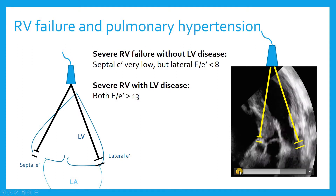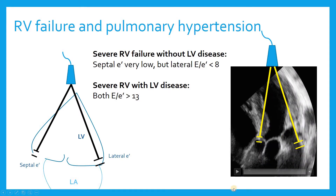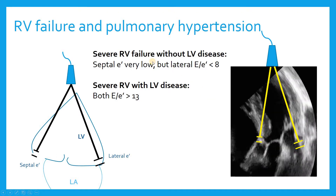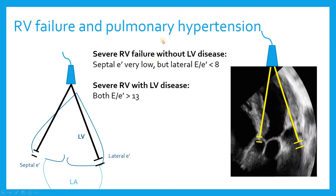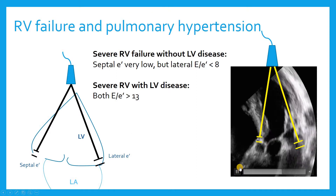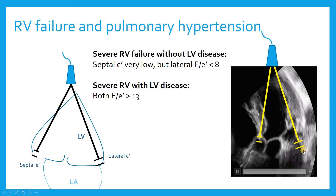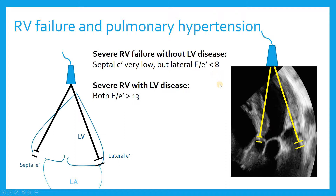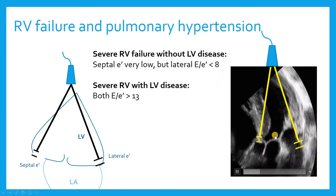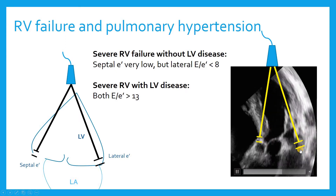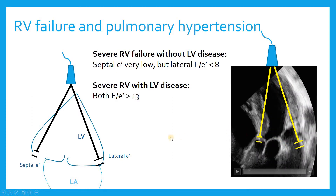This is a parasternal short axis turned on its side to illustrate the concept of distinguishing whether pulmonary hypertension and RV failure are due to left heart disease. One of the best ways to distinguish that is to look at both your septal and lateral E prime velocities. When patients have severe right ventricular failure without left ventricular disease, the septal E prime will be very low, but lateral motion will still be preserved and your lateral E-to-E prime will be normal, suggesting left atrial pressure is normal. This patient had both lateral and septal E primes that were low, and the E-to-E prime ratio was greater than 13, so I concluded this patient had more of a left ventricular cause of their pulmonary hypertension — a diastolic failure type physiology.